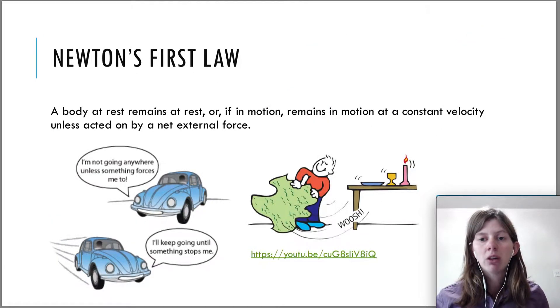So now we're ready to talk about Newton's first law. One way that it's written is as follows: a body at rest remains at rest or if in motion remains in motion at a constant velocity unless acted on by a net external force. It's a lot of words there, but basically what this is saying is that if the object's at rest, it's not going to start moving. This car says I'm not going anywhere unless something forces me to. There has to be a net force on this car for it to start moving.